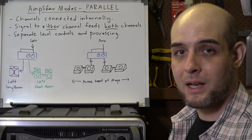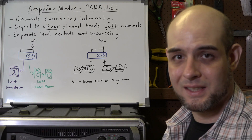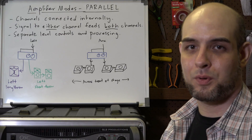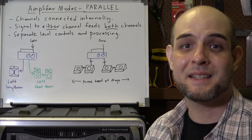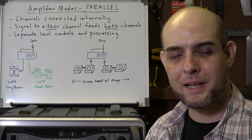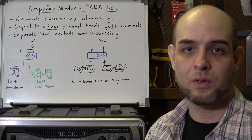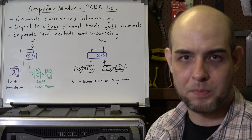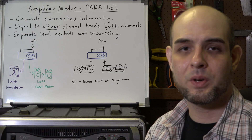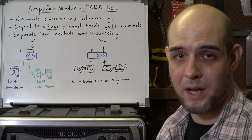Separate level controls and processing — things like high pass filters and limiters — are still set independently. This mode is probably the least glamorous of the three, and is typically used in larger systems where you want to avoid having to run jumpers between multiple amplifier channels. Here are a couple of examples of how this might be used.